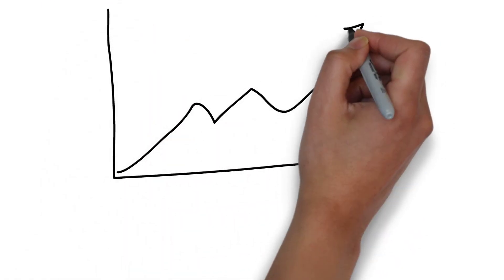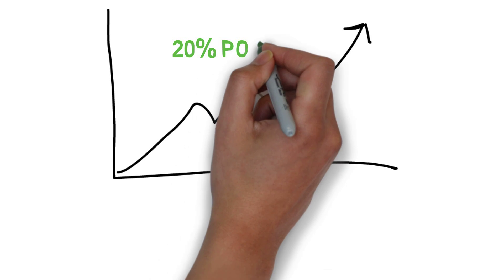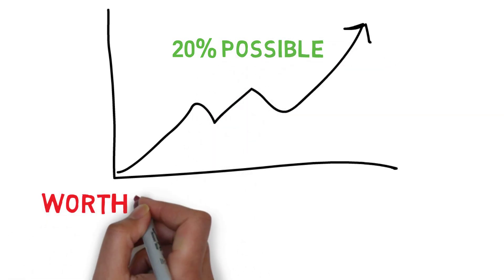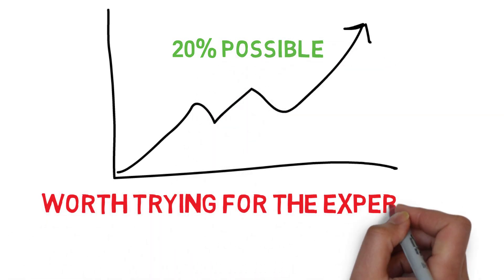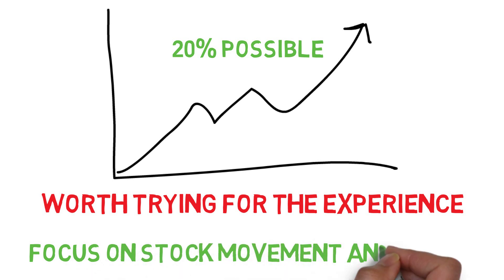The market on average moves up 10% a year. You can definitely beat that but getting even 20% is not too realistic for the average person. If you want to trade with this little money, it can still teach you a lot. In this situation, you want to only focus on how the stock moves, not how much you can make, because it won't be much.